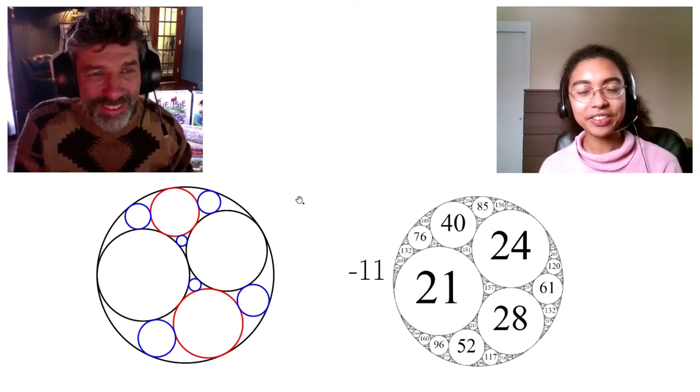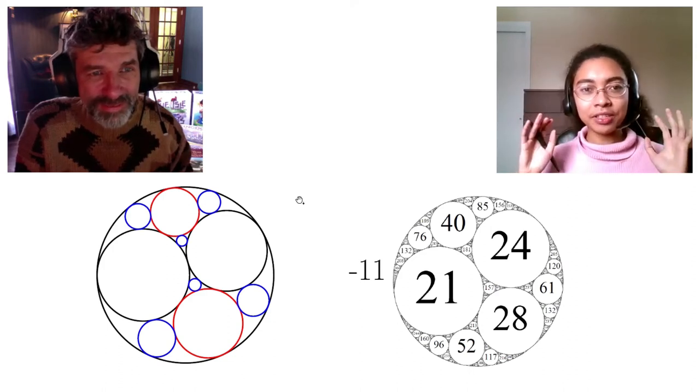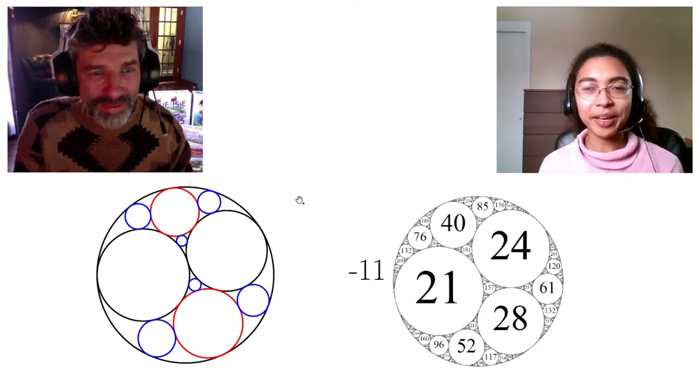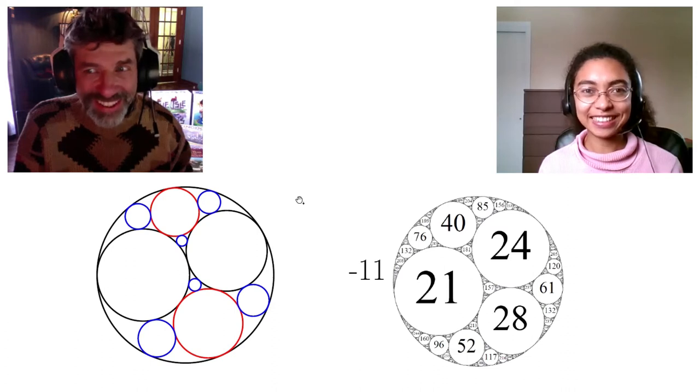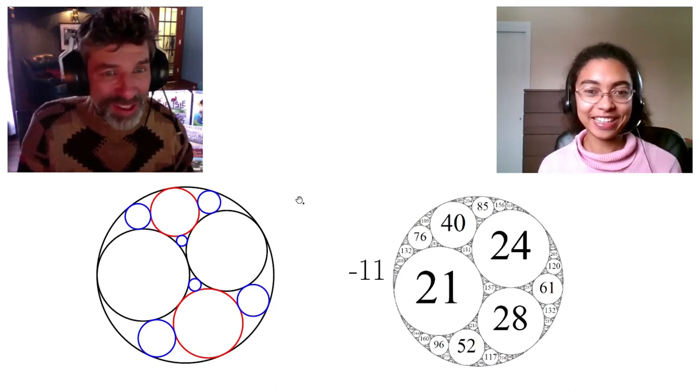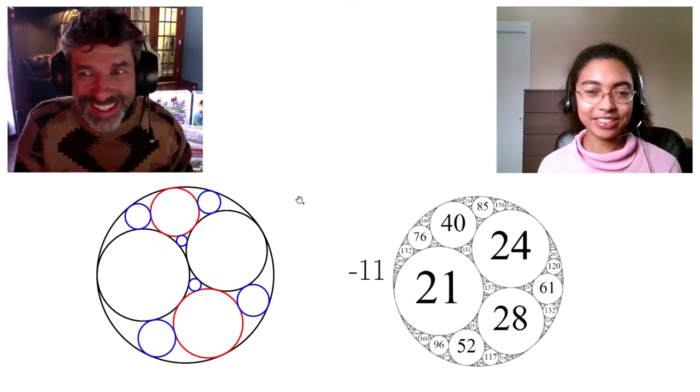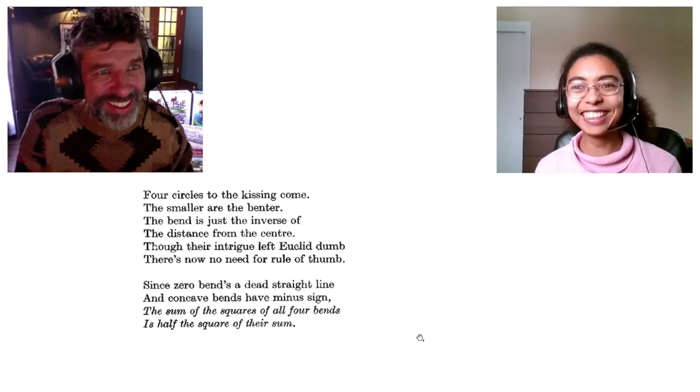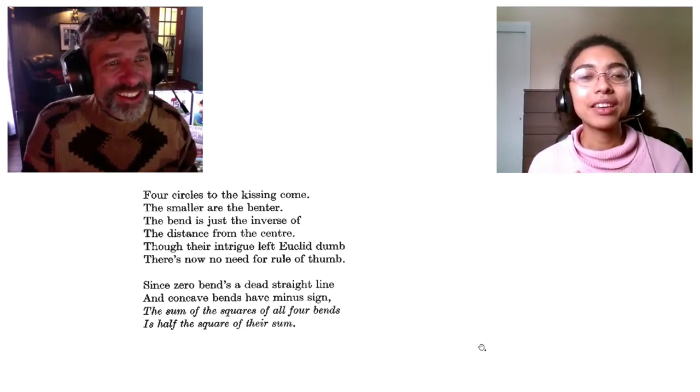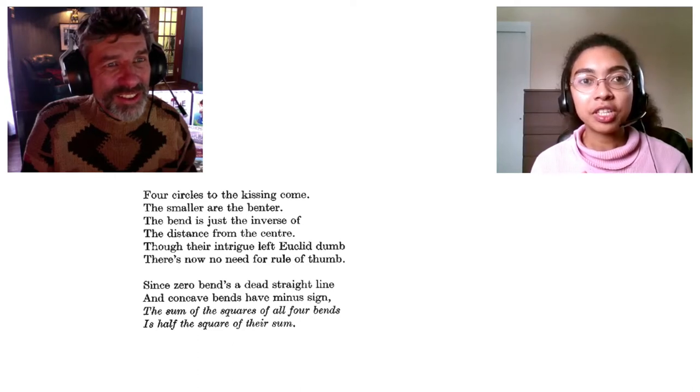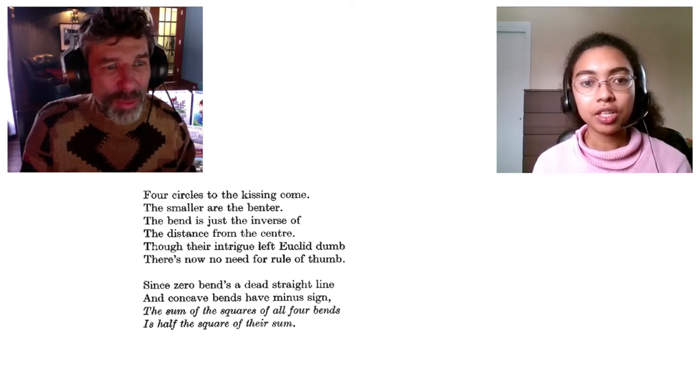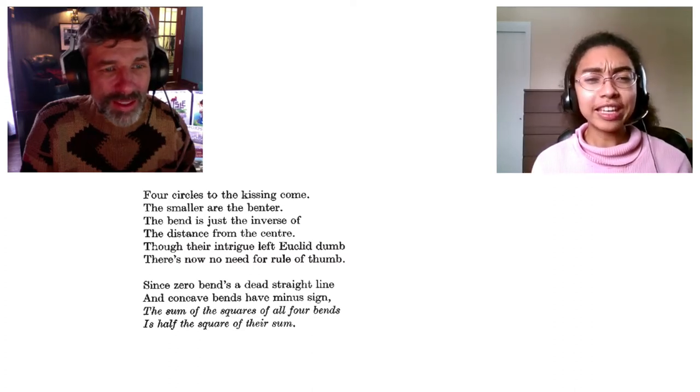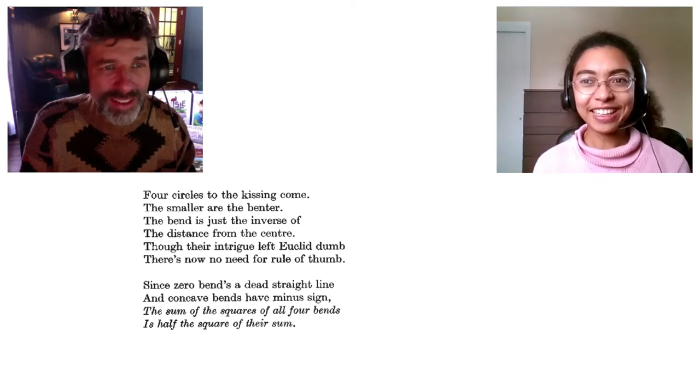There's actually, so Apollonian circle packings have been studied for centuries to the extent that there are poems written about them. Poems? Yes. Oh, I have to go and see one of those poems sometime. Okay. Yeah. So, yeah. Let's actually see an excerpt from one of them. Okay. So, there's this poem called The Kiss Precise by Frederick Soddy. This was published in Nature. Yeah. Nature actually published poems way back when, in 1936.